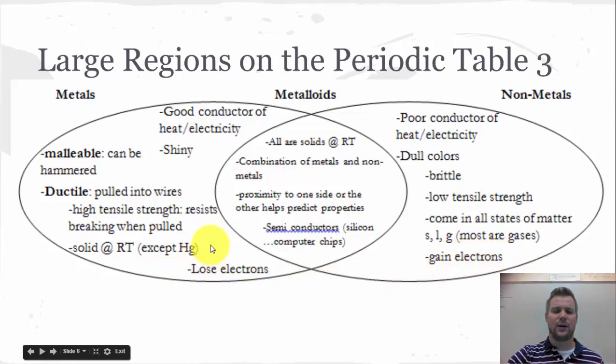That's at least how we look at it for our class. There are some examples where it works differently than that. But lose electrons for metals, gain electrons for non-metals. And then the non-metals come in all three states of matter, solid, liquid, and gas. But most of these are gases.